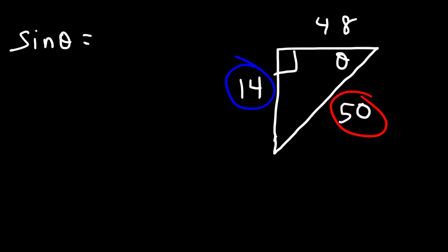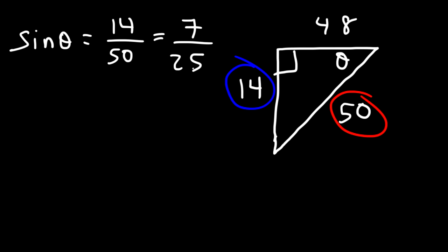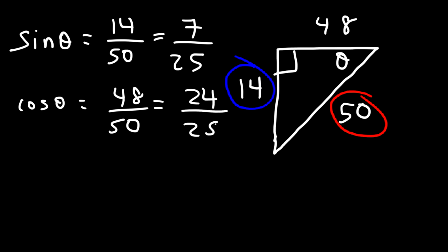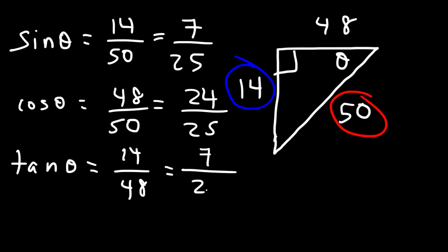Sine theta = opposite/hypotenuse = 14/50, which reduces to 7/25. Cosine theta = adjacent/hypotenuse = 48/50, which reduces to 24/25. Tangent = opposite/adjacent = 14/48, which reduces to 7/24.